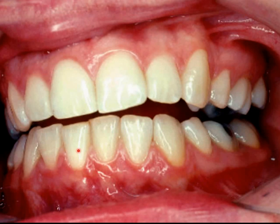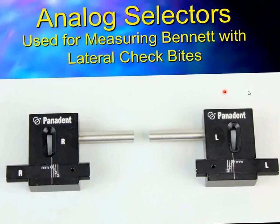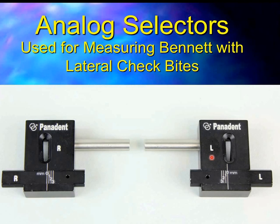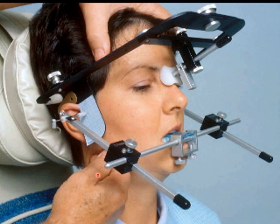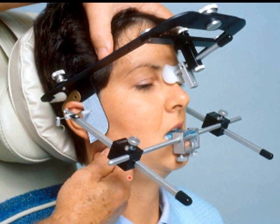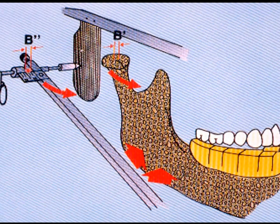We also have analog selectors, a way of measuring Bennett movement using lateral check bites. This was developed more for students at school or for third-world countries that could not afford a hinge axis recorder. We can measure Bennett movement with our hinge axis recorder by moving laterally and simulating a hard push at the angle of the mandible to induce the full amount of Bennett movement. The recording arm is attached to the mandible; as the mandible moves inward, downward, forward, so does the arm, hitting the plate, pushing on the stylus, separating the Bennett ring on the side and measuring the amount of Bennett movement.